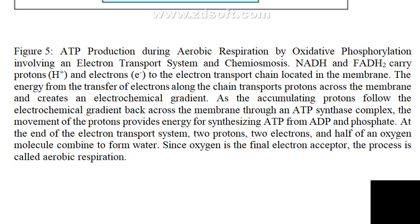At the end of the electron transport system, 2 protons, 2 electrons, and half an oxygen molecule combine to form water. Since oxygen is the final electron acceptor, the process is called aerobic respiration or aerobic phosphorylation. In anaerobic respiration, oxygen is not the electron acceptor — instead, nitrite, ammonia, hydrogen, or hydrogen sulfide serves as the electron acceptor, which will be covered in the third unit.